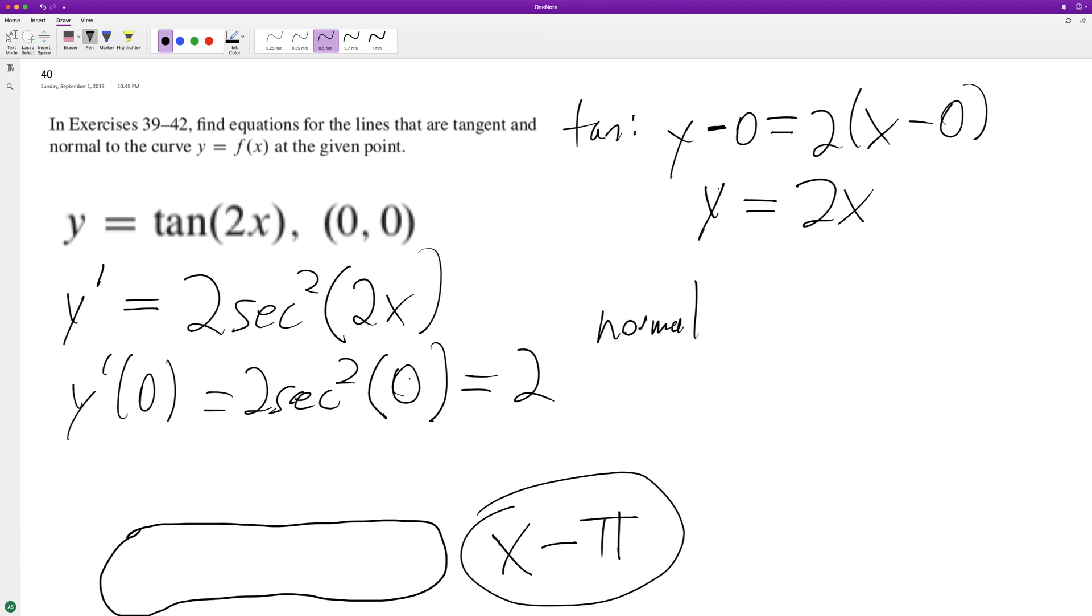Same principle, y minus zero, except for the slope this time we take the reciprocal times negative one. Negative one-half times x minus zero, and we end up with y equals negative...